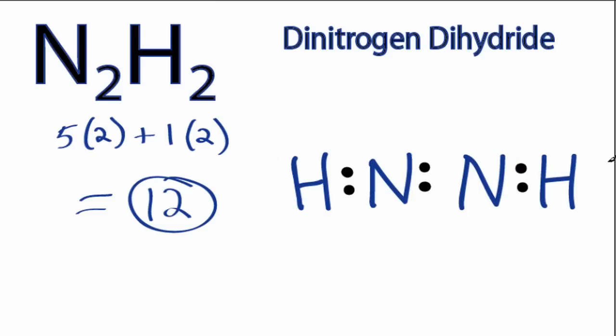Let's go to the center atoms, the nitrogens. We have 2, 4, 6, 8, 10, and 12. We've used all 12 valence electrons.